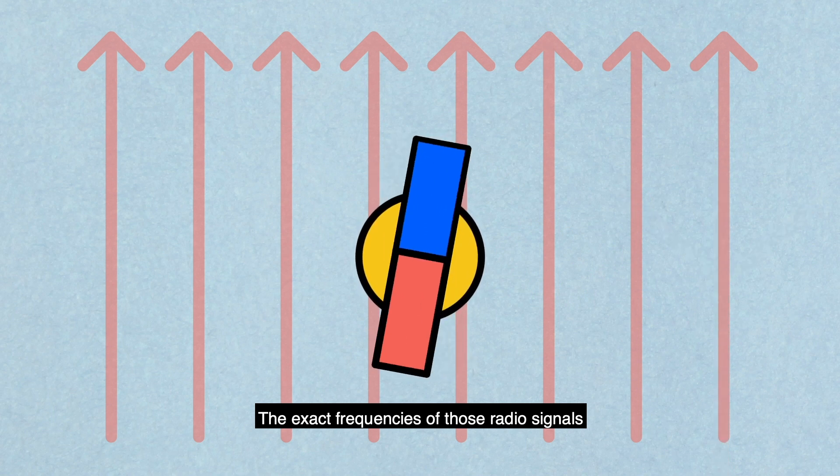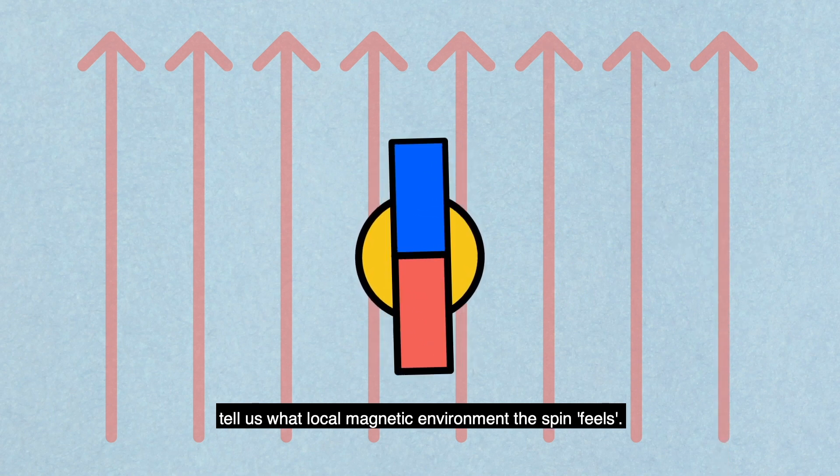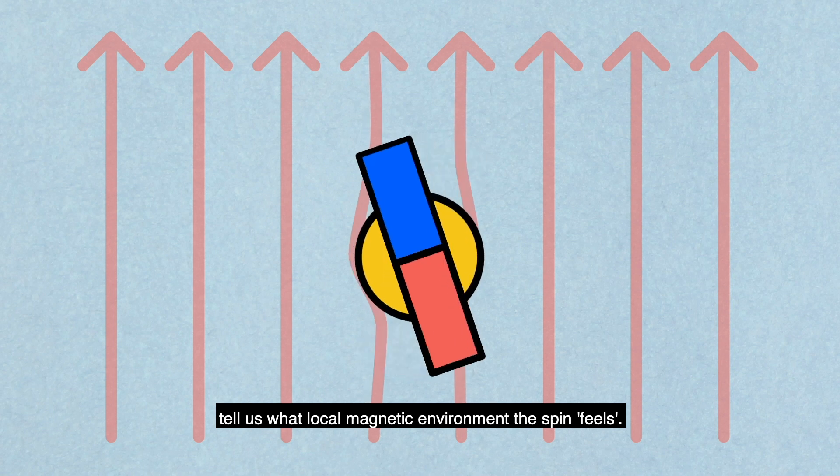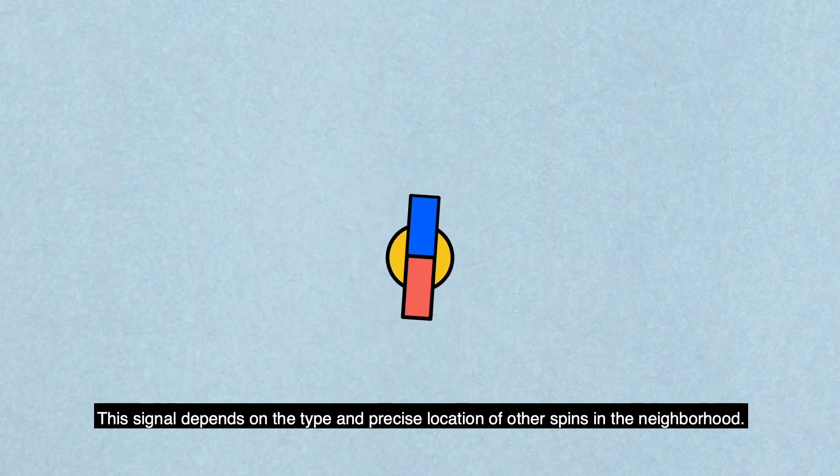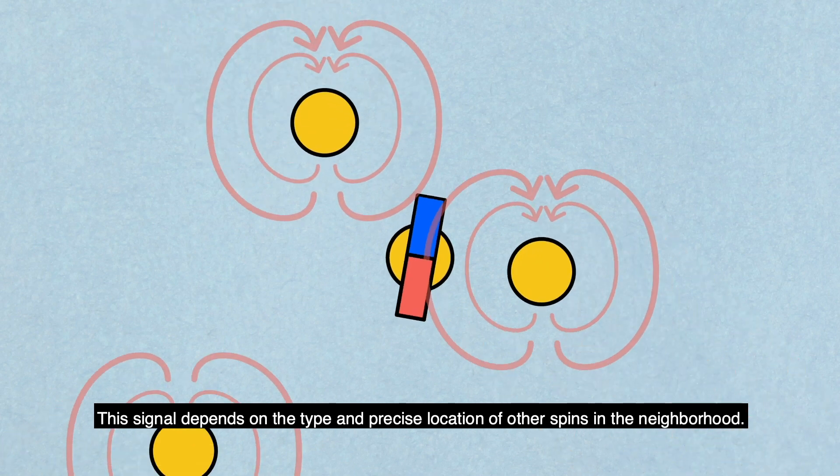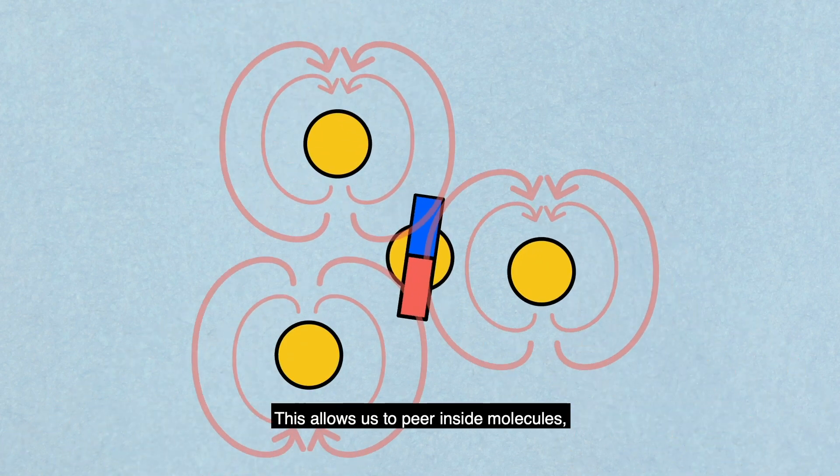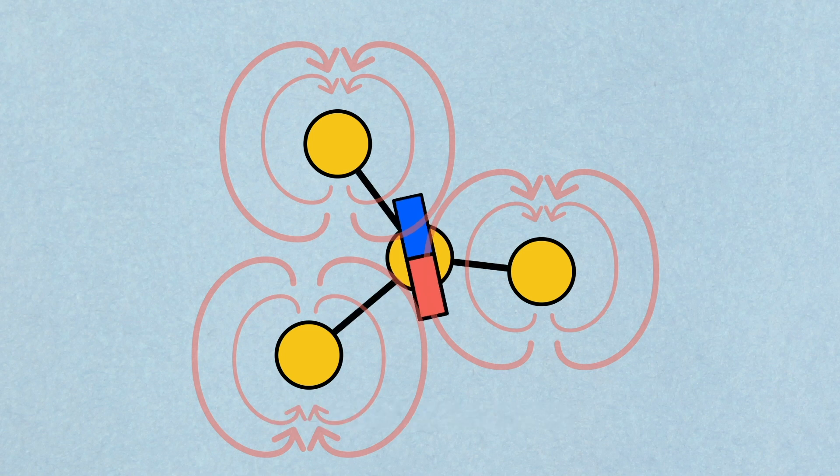The exact frequencies of those radio signals tell us what local magnetic environment the spin feels. The signal depends on the type and precise location of other spins in the neighborhood. This allows us to peer inside molecules, but this method has its limitations.